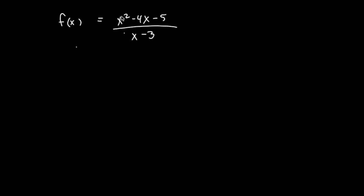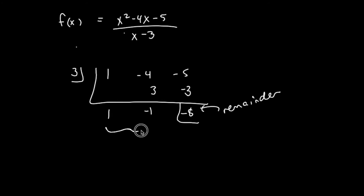So I'm doing synthetic. I'm going to take the coefficients of the numerator: 1, negative 4, negative 5. And then here goes the opposite of this, right? And then follow my steps like 1, multiply, add, multiply, add. This last term is my remainder, right?